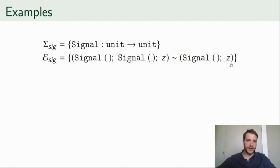Now, an example of a handler that fits the equation is one that returns true as soon as a signal occurs, and false if the computation is evaluated without a single signal. And an example of a handler that does not respect the equation would be a handler that instead returns the number of signals received.